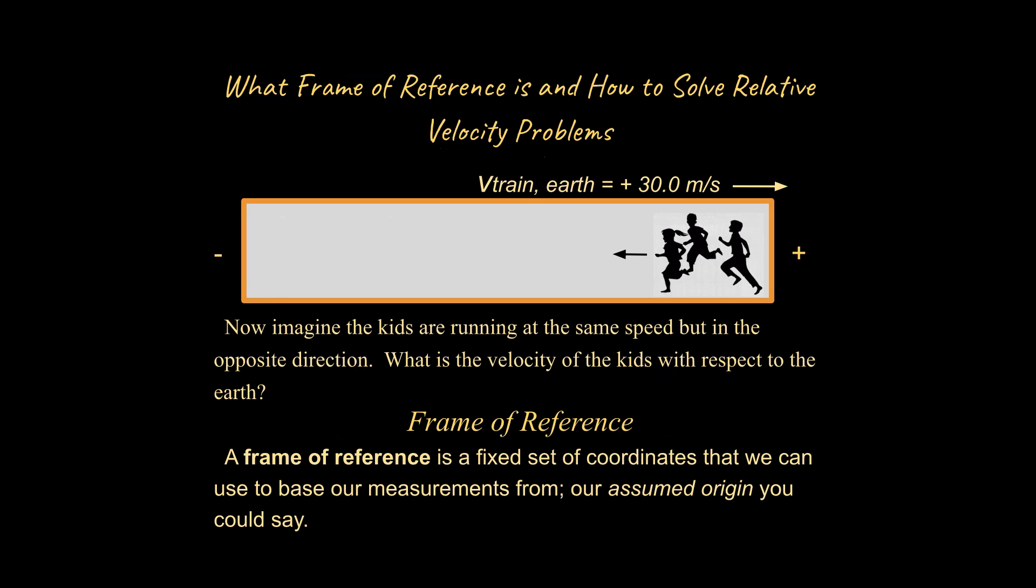Okay, now let's make the problem a little bit more difficult. Let's imagine the kids now have run all the way down to one end of the train, and they need to run back. They're running at the exact same speed, but in the opposite direction. Remember, speed is a scalar quantity. What is the velocity of the kids with respect to the Earth?